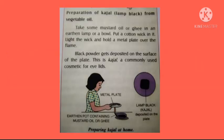Lamp black is also used in the manufacture of tires and gunpowder. Activity: take some mustard oil or ghee in an earthen lamp or bowl and put a cotton wick in it. Light the wick and hold a metal plate over the flame. The black powder gets deposited on the surface of the plate — this is called kajal, a commonly used cosmetic for the eyelids.